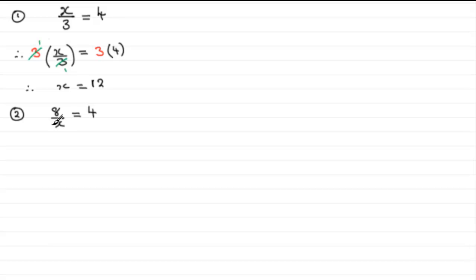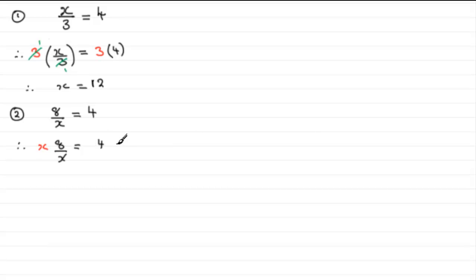You could guess the answer — 8 divided by something equals 4, so it's going to be 2 — but let's go through the process. We need to get rid of the fraction, and here the denominator is x, so we multiply both sides by x. The x in the denominator cancels with the multiplied x, leaving simply 8 on the left.